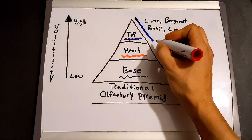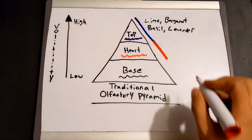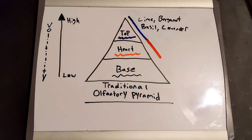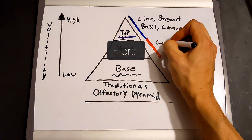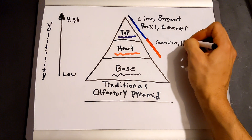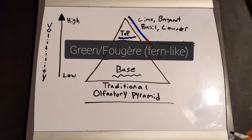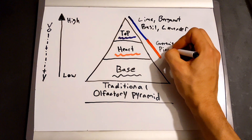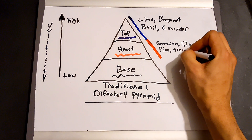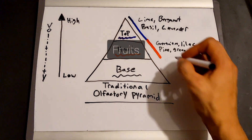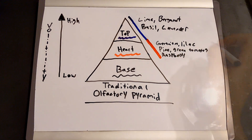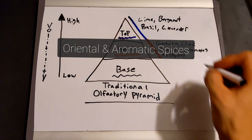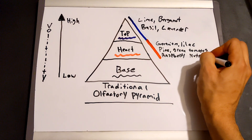Next in the pyramid we have our middle or heart notes, which are typically considered transition notes as the base begins to appear. Sometimes the early phase of a base note can be unpleasant, so this would be used to hide the early stages during its maturation. Here you'll see floral notes like geranium or lilac, green or fougère — which means fern-like notes — like pine and green tomatoes, fruits like raspberries, and last but not least oriental and aromatic spices like nutmeg or ginger.